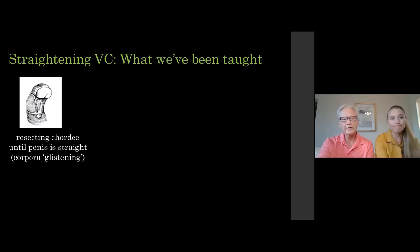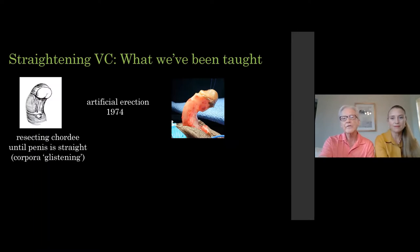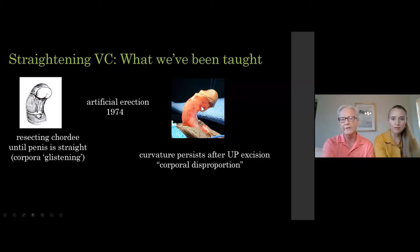We were taught that resecting chordee would leave the penis straight. The problem is the artificial erection to check curvature didn't come along until the early 1970s. When it did, it became apparent that after cutting all that tissue away, the penis is very frequently still bent. This picture mimics exactly one that John Duckett published, leading him to say the problem isn't chordee — it's that the ventral corpora is shorter than the dorsal corpora. He called this corporal disproportion.